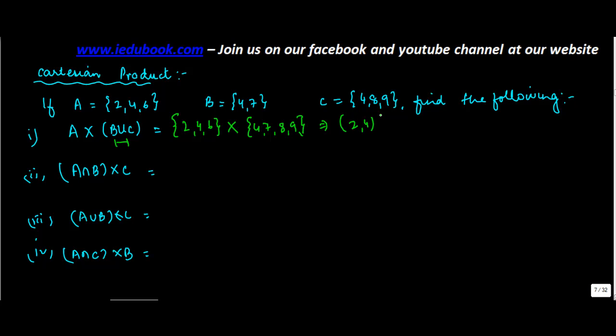So you get 2 with 4, 2 with 7, 2 with 8, 2 with 9. I hope you are clear. So let me just explain once again. For 4, you will get 4 with 4, 4 with 7, 4 with 8, 4 with 9.